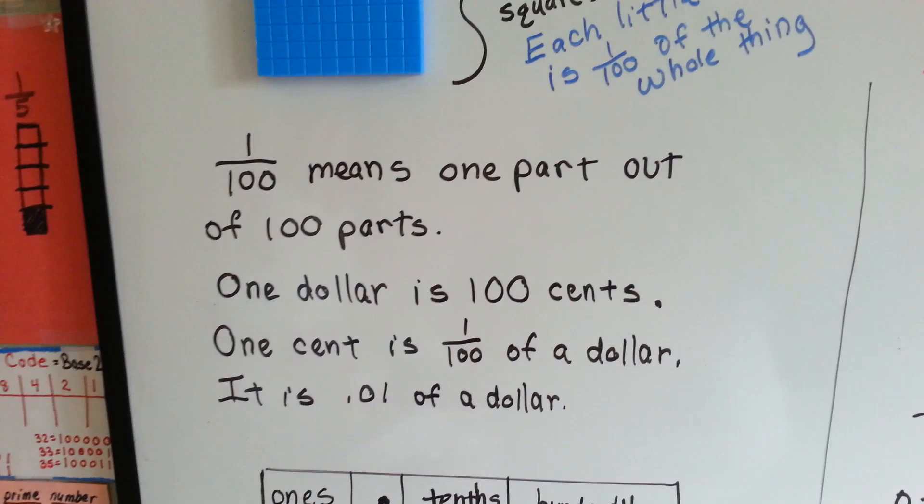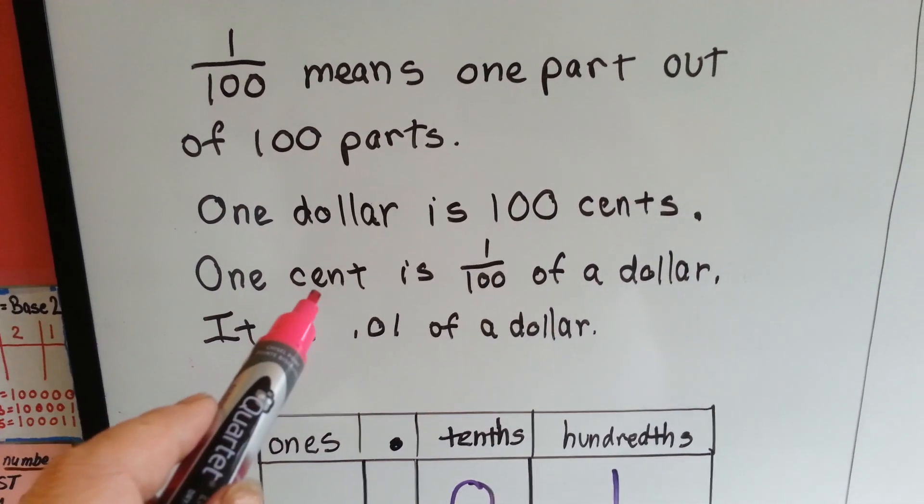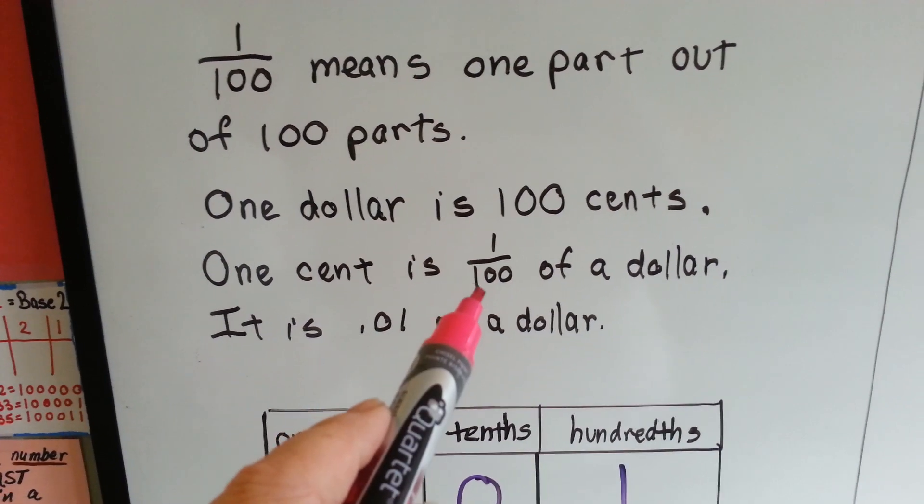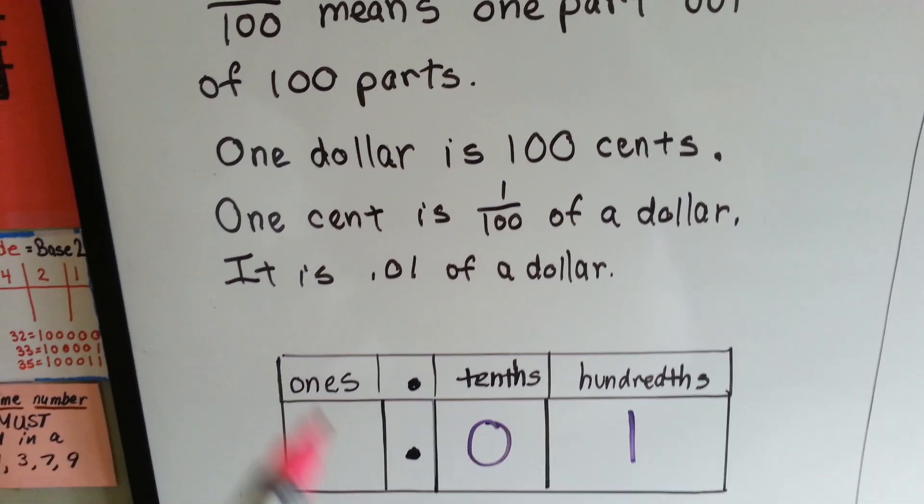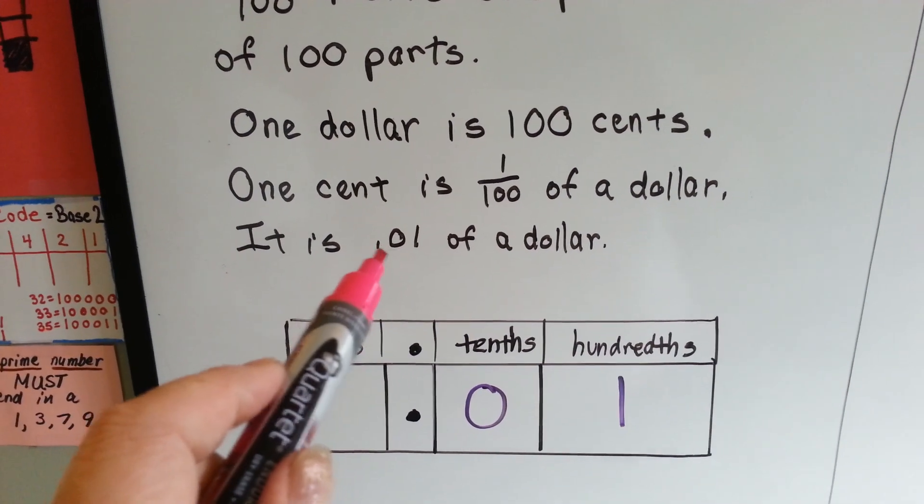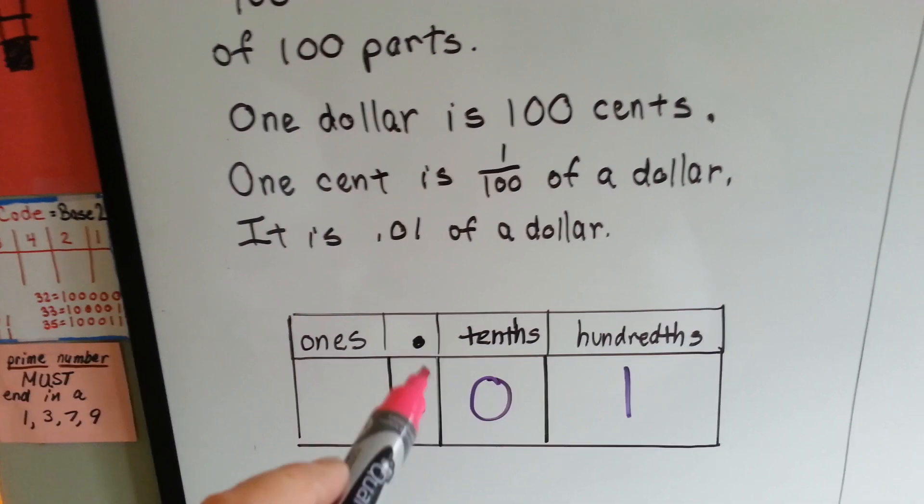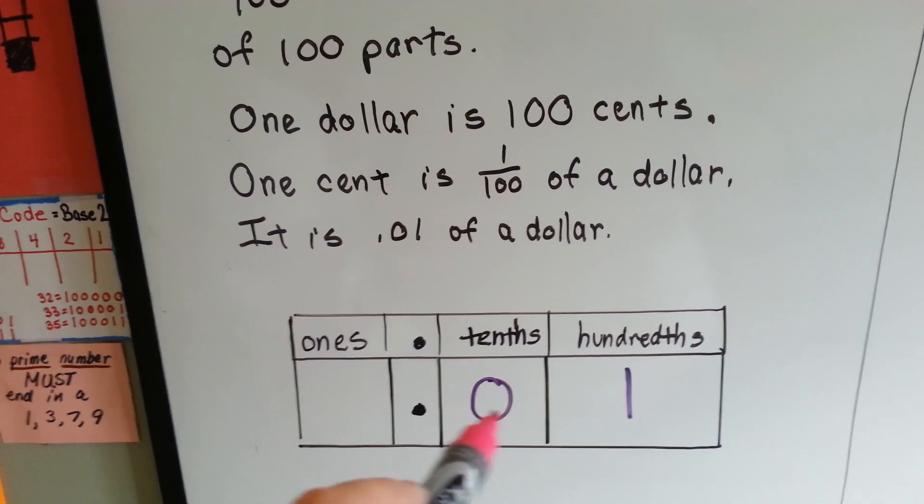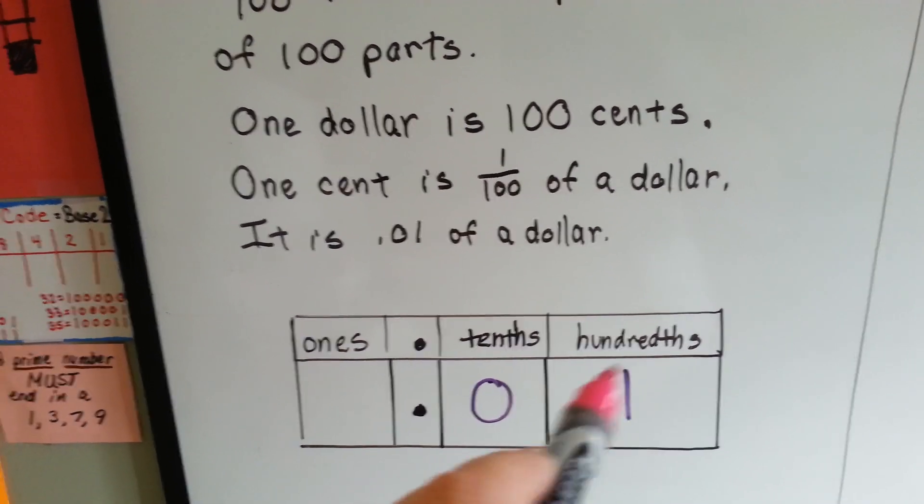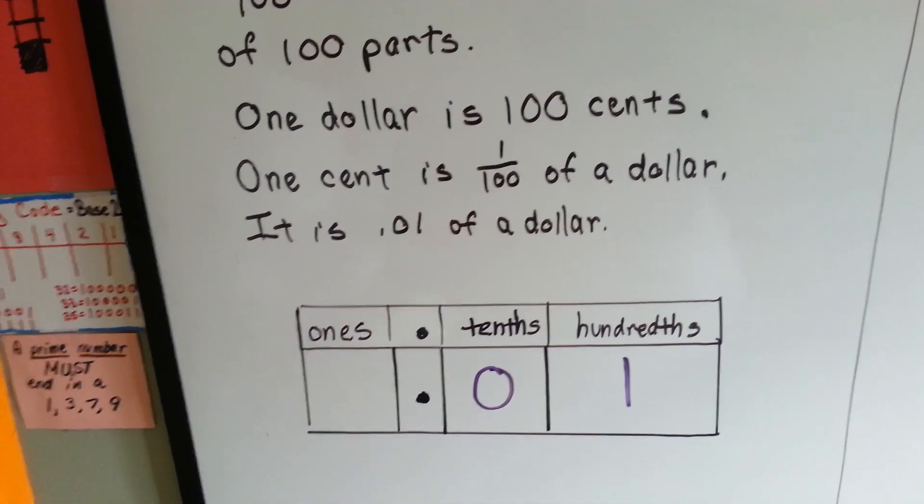One dollar is one hundred cents, so one cent is one one hundredth of a dollar. It is point zero one of a dollar. One hundredth. This is the ones place, we have our decimal point, we have our tenths place, and we have our hundredths place. And a penny, one cent, is one hundredth.